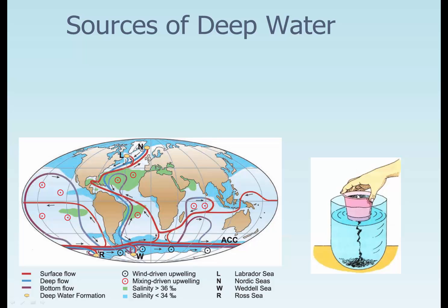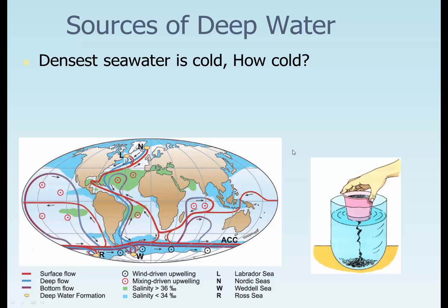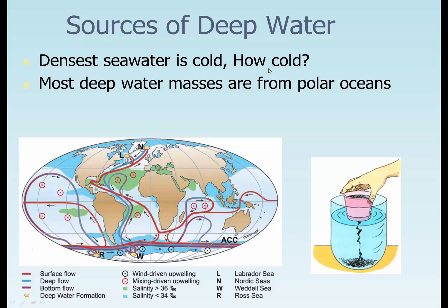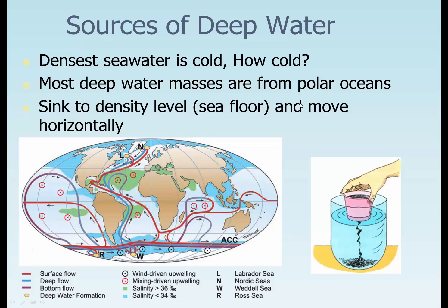We'll put cold colored water — probably an ice cube — in water and it will melt, and we'll have holes at the bottom of the cup to see the water flow. This is the deepest sea water on the planet. It is the coldest, saltiest water — 4 degrees Celsius — the most dense water on the planet. Most deep water masses are from polar oceans, forming up there and down here, and they sink due to density. They hit the abyssal plain and move horizontally.